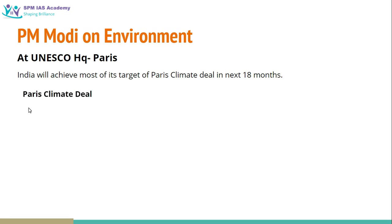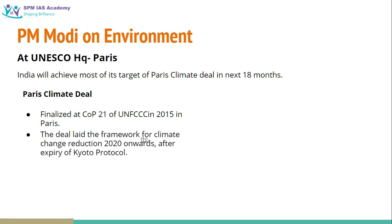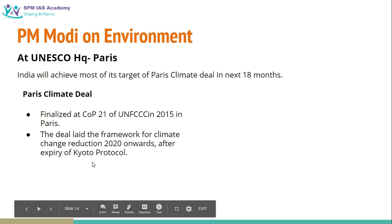Let us have a brief idea about the Paris Climate Deal. It was finalized at COP 21 — Conference of Parties 21 — of the United Nations Framework Convention on Climate Change in 2015 in Paris, and that is why it is known as the Paris Climate Deal. The deal laid the framework for climate change reduction from 2020 onwards, after the expiry of the Kyoto Protocol. The Kyoto Protocol first part was functional from 2008 to 2012, and the second part from 2012 to 2020. From 2020 onwards, the Kyoto Protocol will be replaced by the Paris Climate Deal.